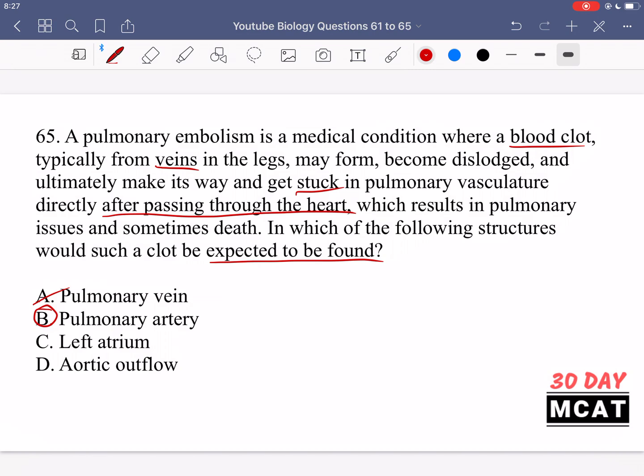We're told it goes after passing through the heart, that would be the artery not the vein. Option C is saying the left atrium but that's part of the heart, it would pass through there and go into the pulmonary arteries. And D aortic outflow, no we are talking about a pulmonary embolism so that would be in the pulmonary circulatory system not the systemic one. So B is the correct answer here.